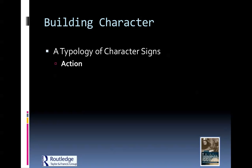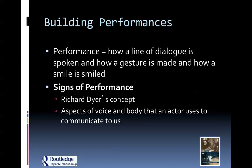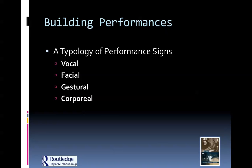Action — how the characters actually move around — is very important, as is how dialogue is spoken, how a gesture is made, how a smile is smiled. These are all signs. Richard Dyer said the aspects of the voice and body that an actor uses to communicate are also considered signs of performance: vocal, facial, gestural, corporeal — voice, face, gestures with the hands, and the body. Actors work very hard on all of these things to make sure they are conveying their character.